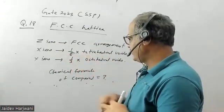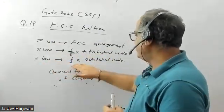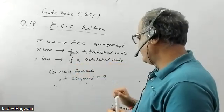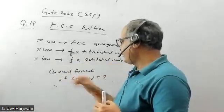X ions occupy one-sixth of the tetrahedral voids, and Y ions occupy one-third of the octahedral voids. So what is the chemical formula of the compound?